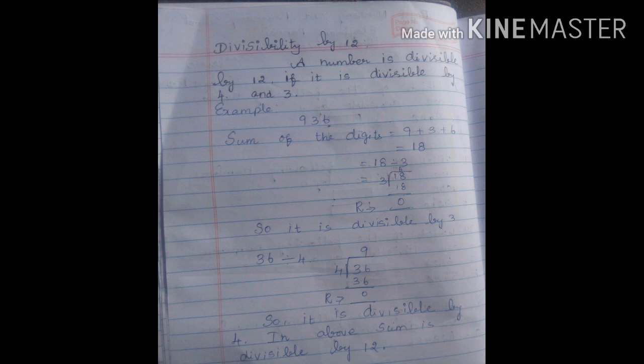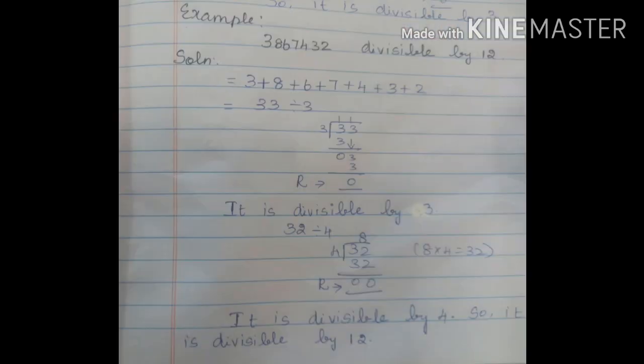So let's take an example. Now we have a 7-digit number: 3, 8, 6, 7, 4, 3, 2. Check the divisibility by 12. So we will check the divisibility by 12. So first, rule 3 apply.